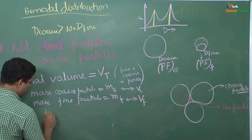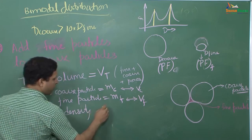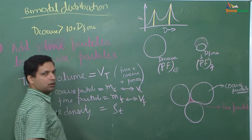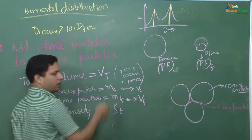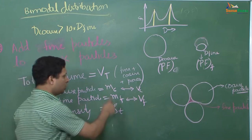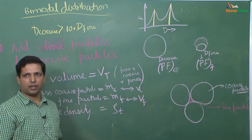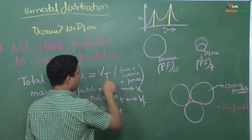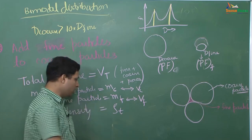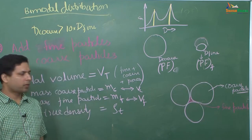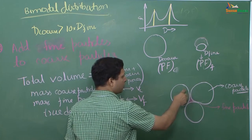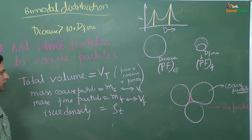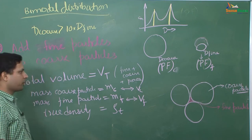Let us also define true density rho-t. If you take Mc divided by Vc, that equals the true density because we are looking only at the mass of the coarse particle and the volume occupied by the coarse particle. Similarly, Mf divided by Vf is also the true density. However, if we take Mc divided by Vt, that is a lower density because Vt includes the pores between coarse particles, and that density we can call rho-coarse.